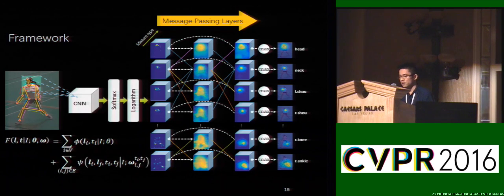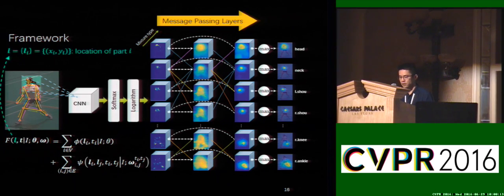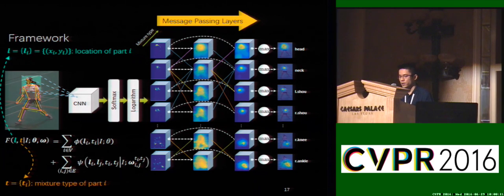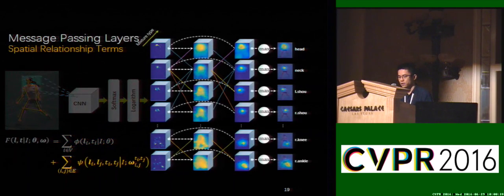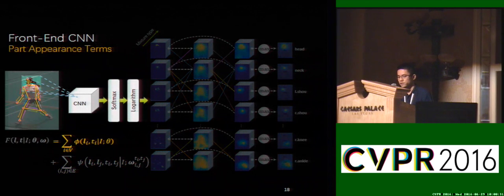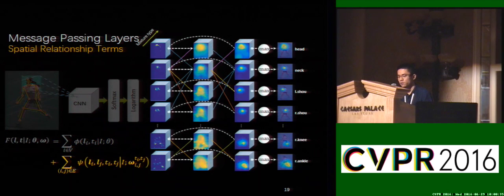Given an image, the full score of a pose configuration can be computed in a forward pass. In this function, l is the xy location of each part and t is the mixture type of each part. The full score consists of the unary term and the pairwise term. The unary term models the part appearance by the front-end CNN, and the pairwise term is modeled by the message-parsing layers, which encode the spatial relationships between body parts.